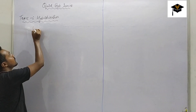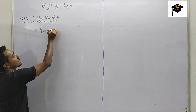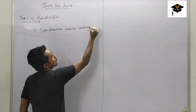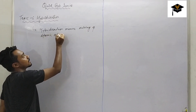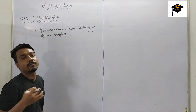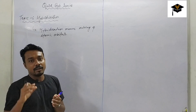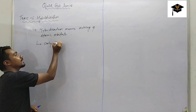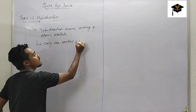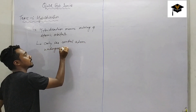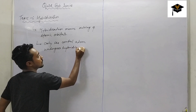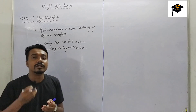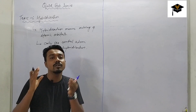So what is hybridization? Hybridization simply means mixing of atomic orbitals. From an entrance exam point of view, this much information is enough. One more important thing: only the central atom undergoes hybridization. In a molecule there will be more than one atom, but only the central atom will undergo hybridization; the other atoms just take part in bonding and do not undergo hybridization.